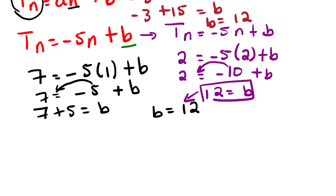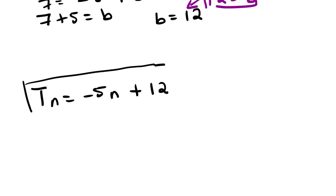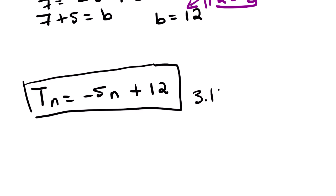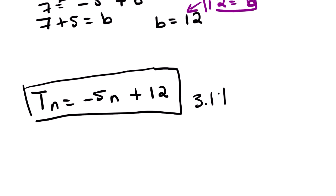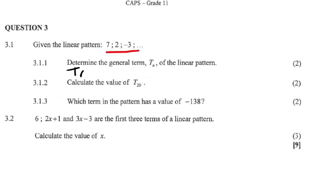So we can write our answer: Tn equals negative 5n plus 12. This is the answer to 3.1.1. Now let us go to the second question — 3.1.2 says calculate the value of t20, so we want to know the term which is in position number 20.